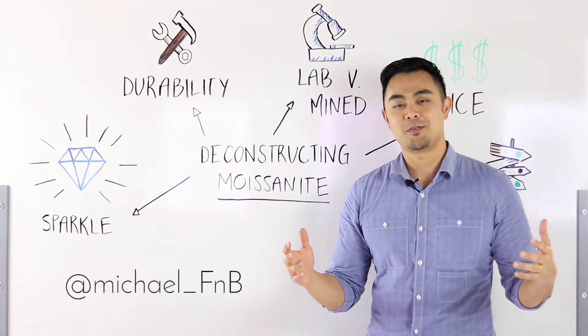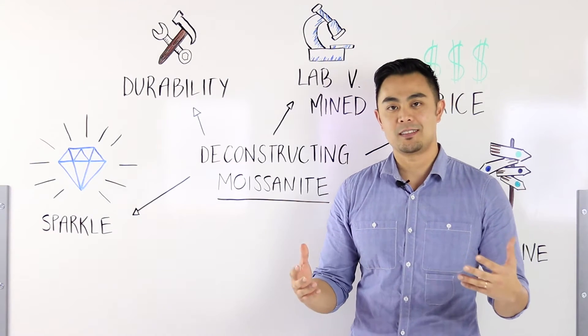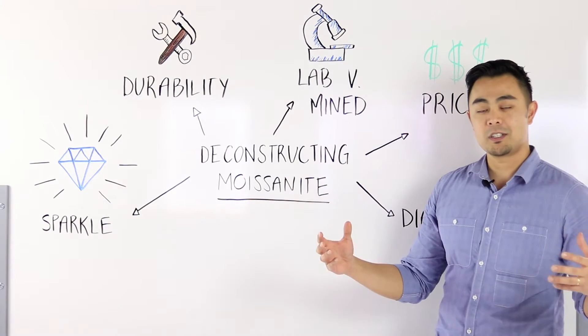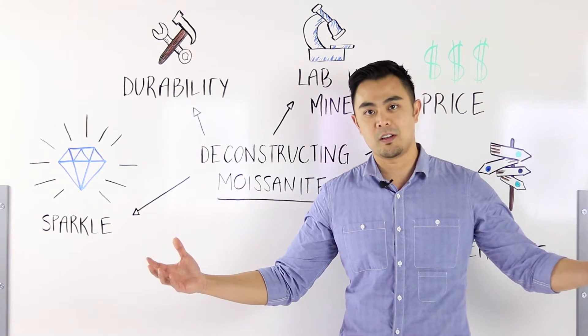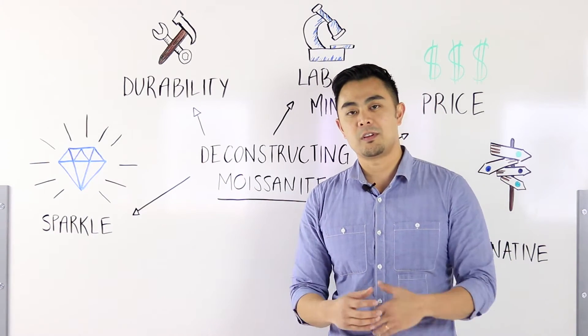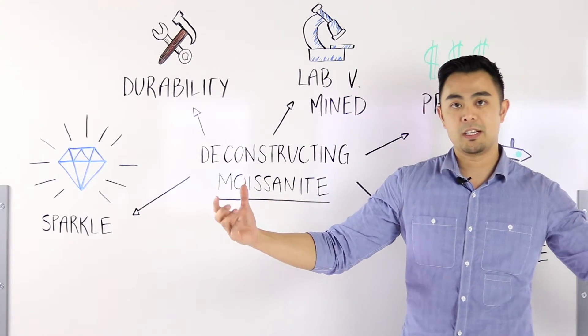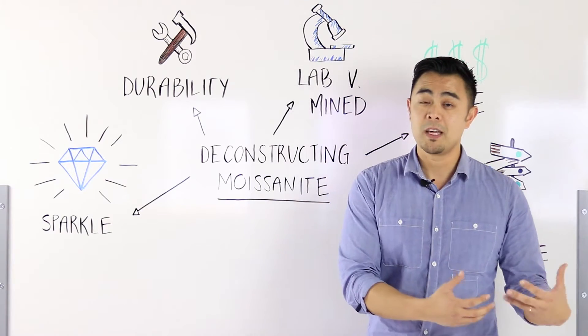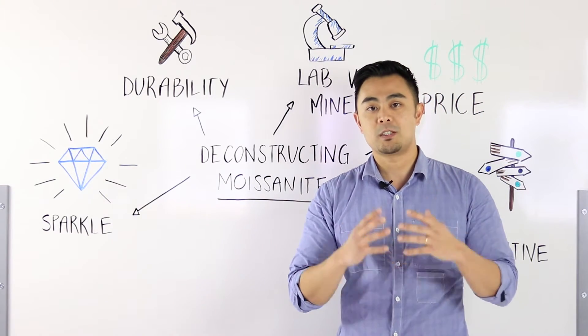Hi, my name is Michael from Fire and Brilliance, and today I'd like to talk about deconstructing moissanite. It's a very popular subject in today's world because there are so many options available right now with the use of technology and mining jewelry. There are more options than just the traditional way, and this is a very popular subject that I want to address. So let's break it down into five points.